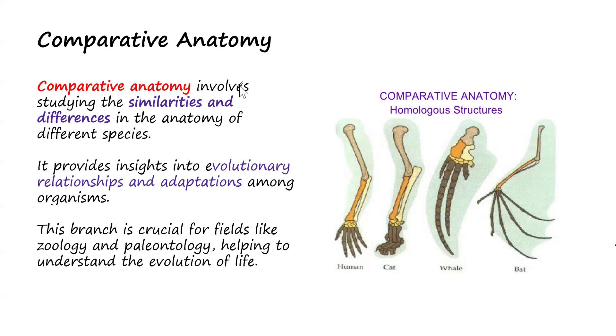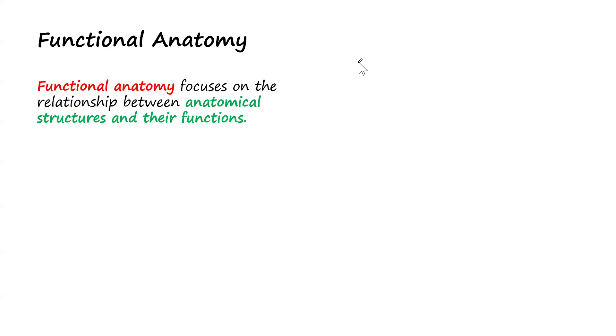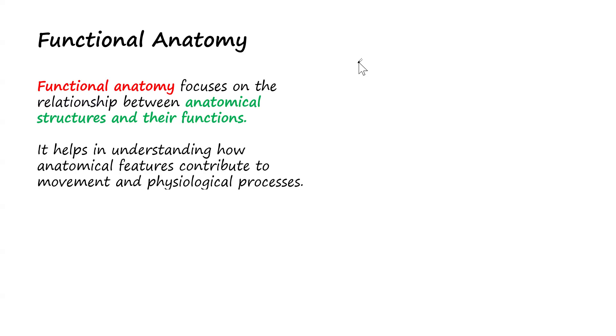The next branch is functional anatomy. Functional anatomy focuses on the relationship between anatomical structures and their functions — how organs relate to their functions. For example, what is the anatomy of the liver and what are also the functions of the liver? Functional anatomy links anatomical structures to their corresponding functions.